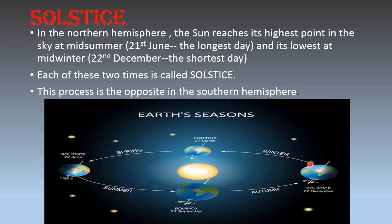Now look at the second position — in the northern hemisphere the sun is at its lowest point. So the countries in the northern hemisphere experience the shortest day of the year on 22nd December, while countries in the southern hemisphere experience the longest day of the year on 22nd December. So, can you tell in which hemisphere your country is located? The country which we live in is in the northern hemisphere, because we experience the longest day on 21st June and the shortest day on 22nd December.